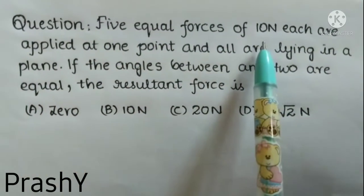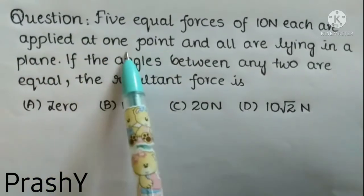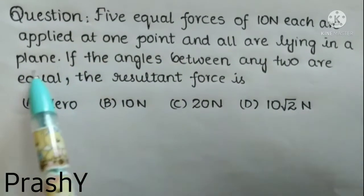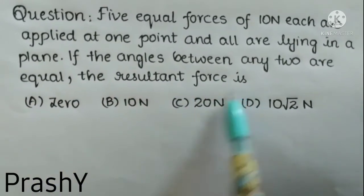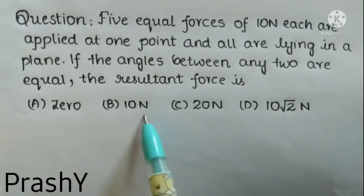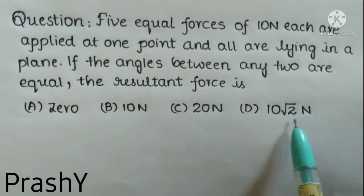Five equal forces of 10 newtons each are applied at one point and all are lying in a plane. If the angles between any two are equal, then the resultant force is: zero, 10 newtons, 20 newtons, or 10 root 2 newtons.